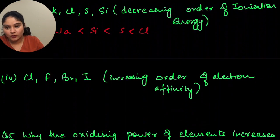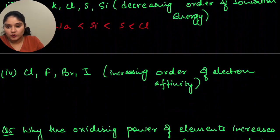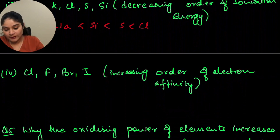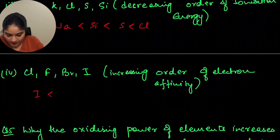Next: chlorine, bromine, iodine — arrange in increasing order of electron affinity, that is the ability to accept an electron. The answer would be: iodine, bromine, fluorine, and chlorine.